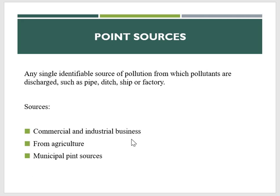The first common type of point source is commercial and industrial businesses, which use hazardous materials for manufacturing and maintenance. The waste produced is discharged into a water body and can include solvents, petroleum products like oil and gasoline, and heavy metals.